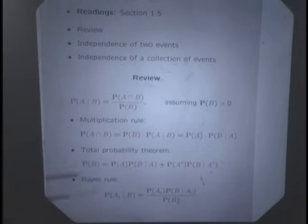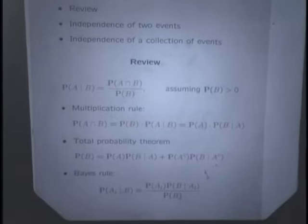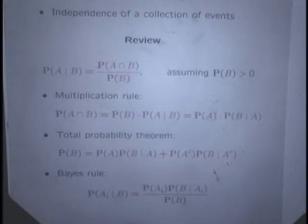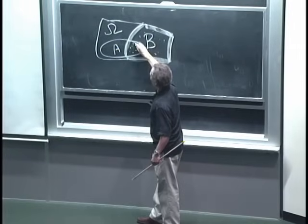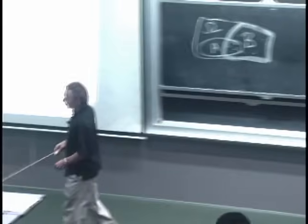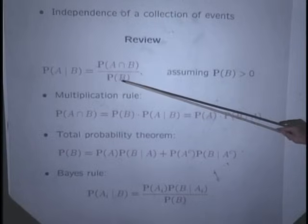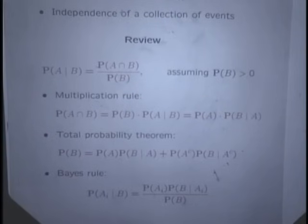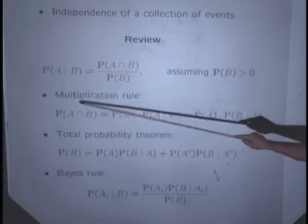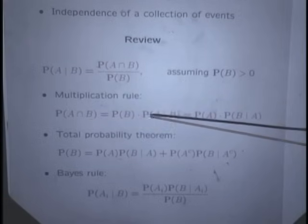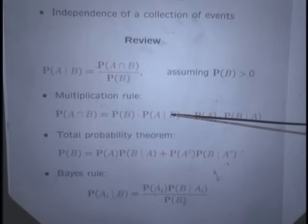We need to reassign probabilities to the various possible outcomes, because outcomes outside B now have zero probability. The new probabilities are called conditional probabilities, defined as follows: the conditional probability that A occurs given that B occurred is calculated by taking the fraction of B's total probability that is assigned to outcomes that also make A happen.